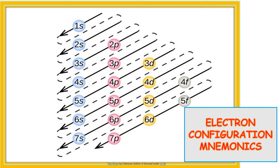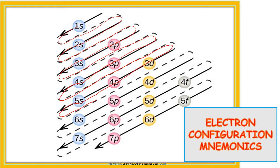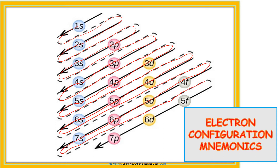We are going to start with 1s, 2s. Follow the line and arrow. You have 2s, next is 2p, 3s, 3p, 4s. And you have 3d, 4p, 5s. Connect, follow the arrow, down to 4d, 5p, 6s, 4f, 5d, 6p, 7s. Up to 5f, 6d, and 7p.